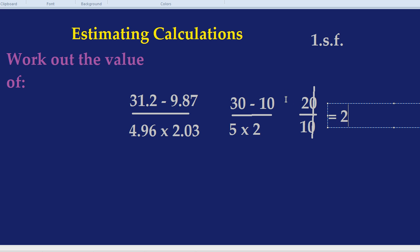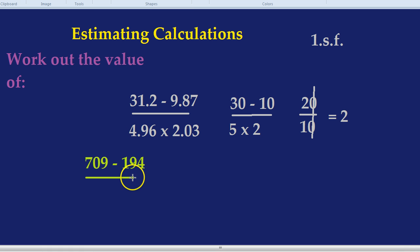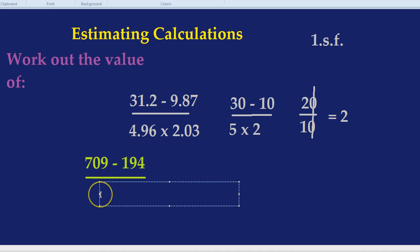Let's do a slightly harder estimate question. How about if we had something like a 3 digit number, so like 709 take away 194 divided by 0.53. Something like that. This will test whether we're rounding to one significant figure.